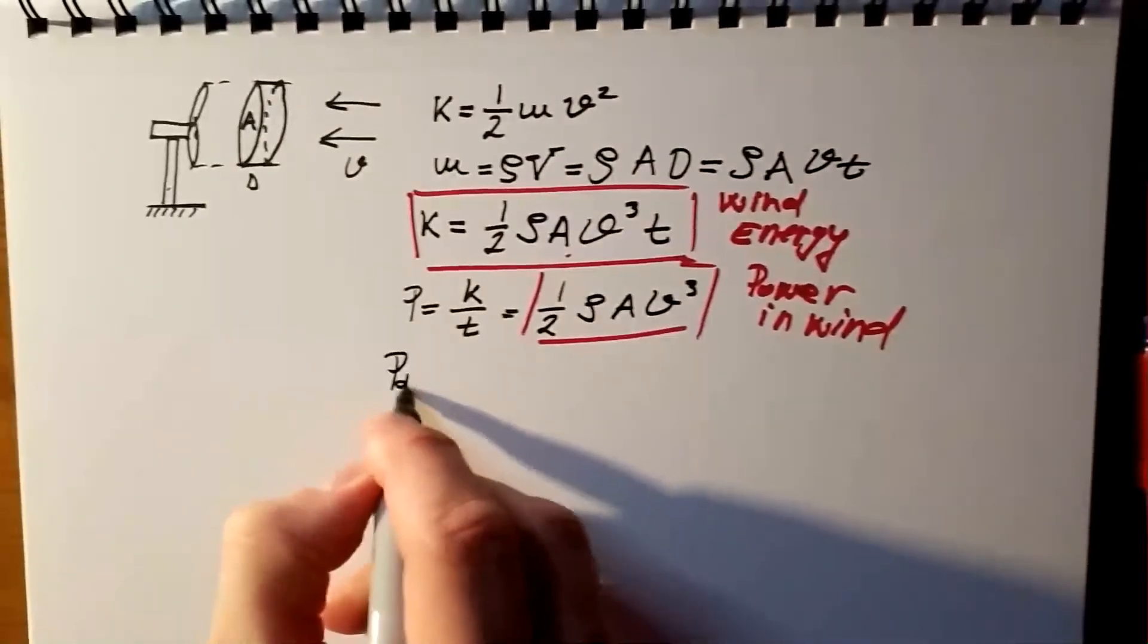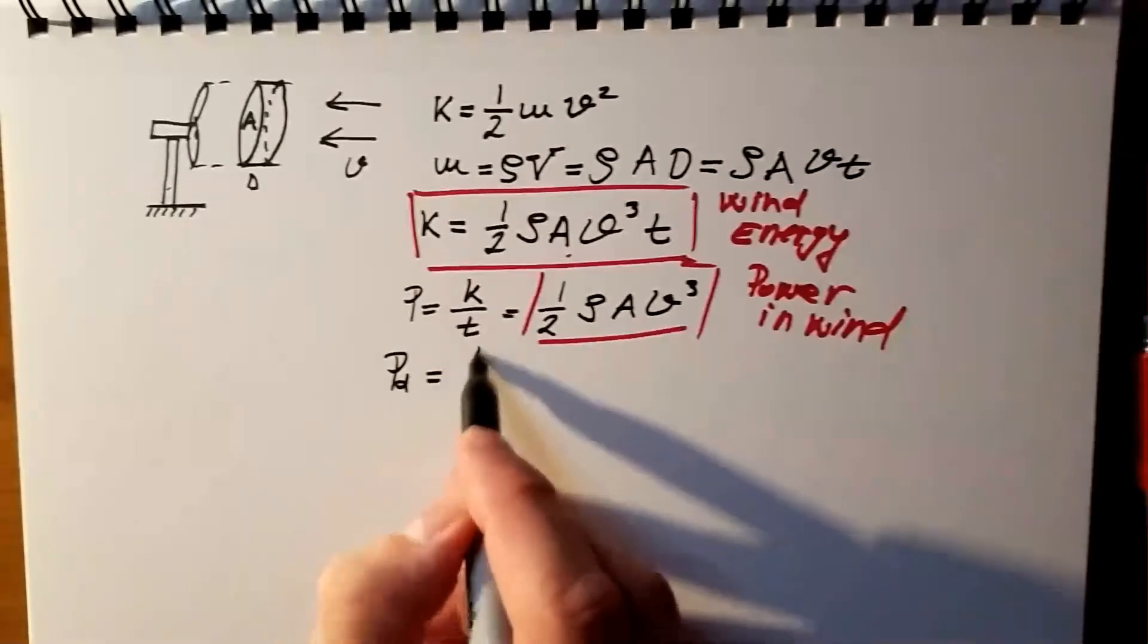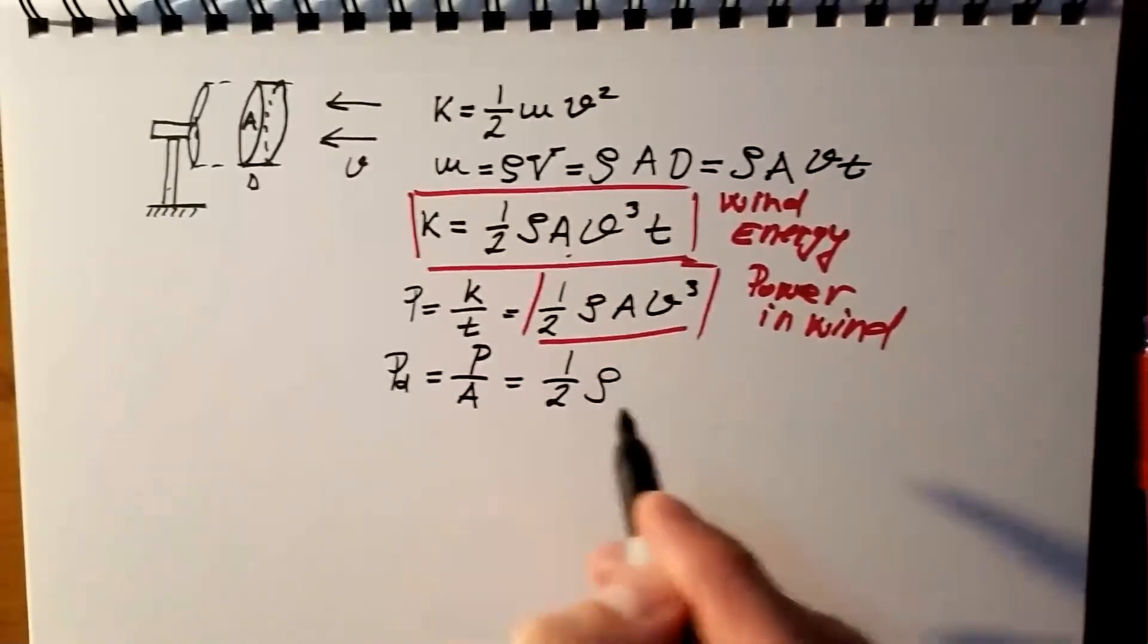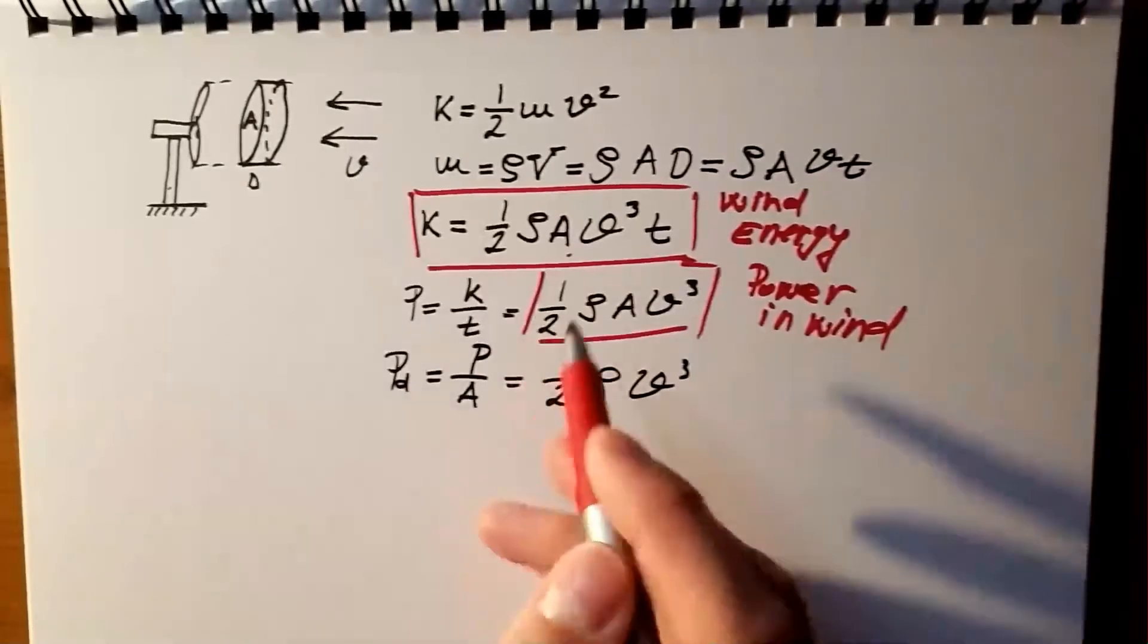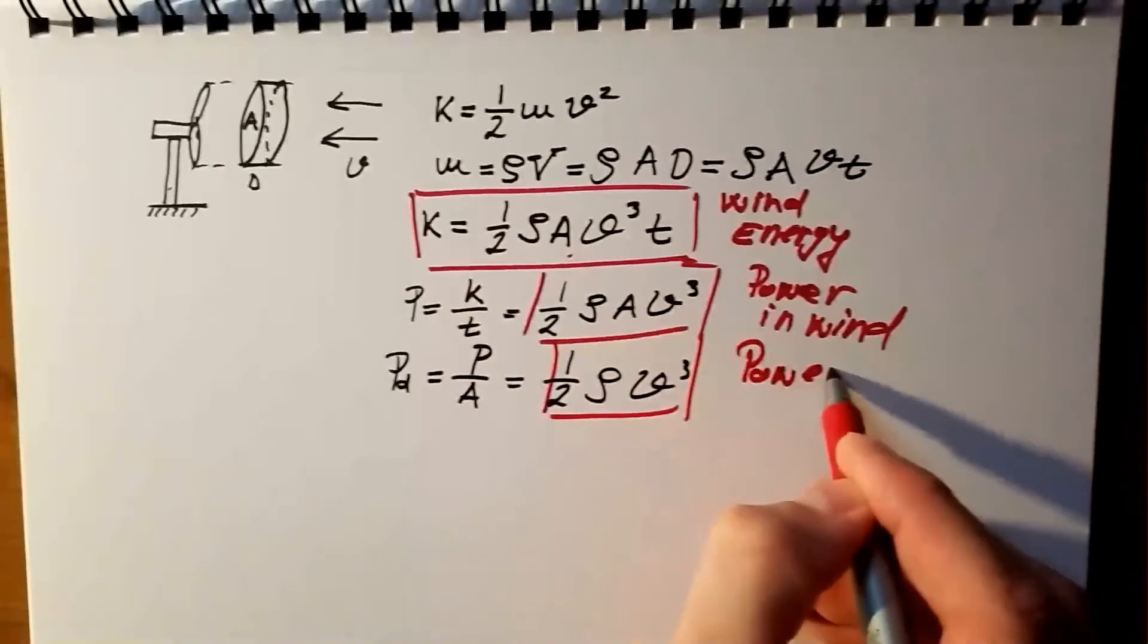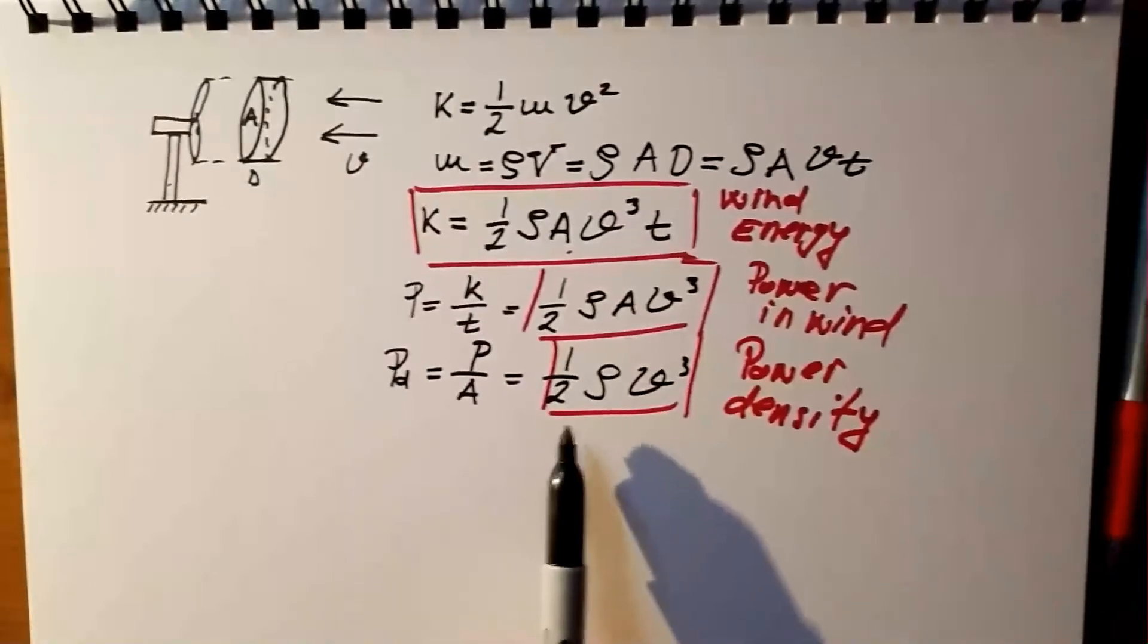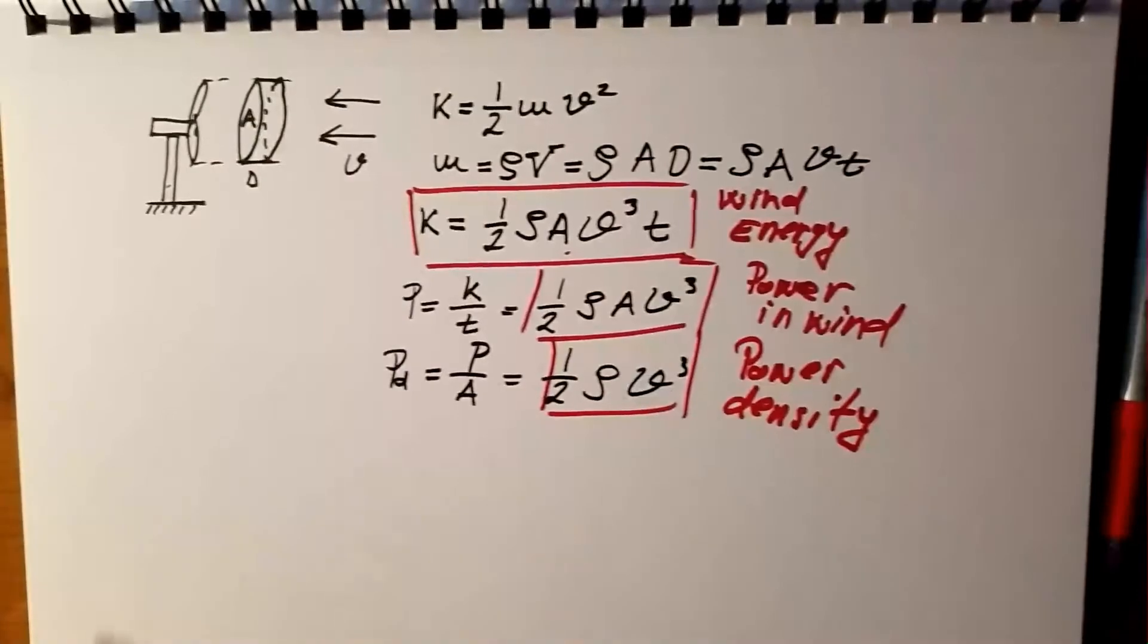PD, which is power over area, which is clearly ½ ρ velocity to the power of 3, and this is now power density. The beauty of power density, it is only function of wind, density of air and wind speed.